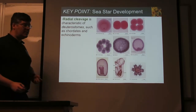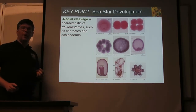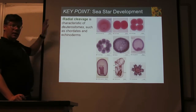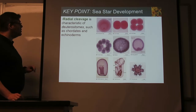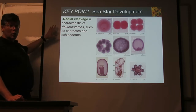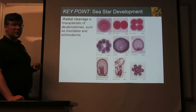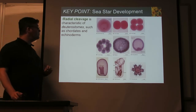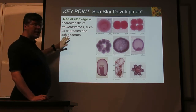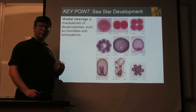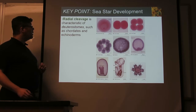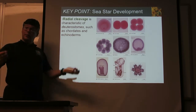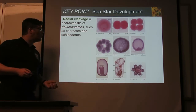Radial cleavage, as you may recall if you look through the PowerPoint on invertebrates, is typical of the deuterostomes and certain other things. So chordates, such as ourselves — the vertebrates and their close relatives, the sea squirts, the lancelets — those are chordates. Also the echinoderms: starfish, sea cucumbers, sea lilies, sea urchins, things like that. And you've got the acorn worms in there as well.